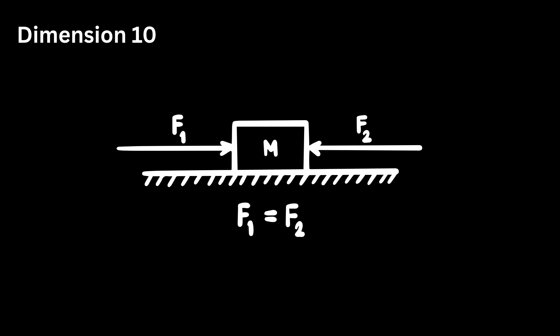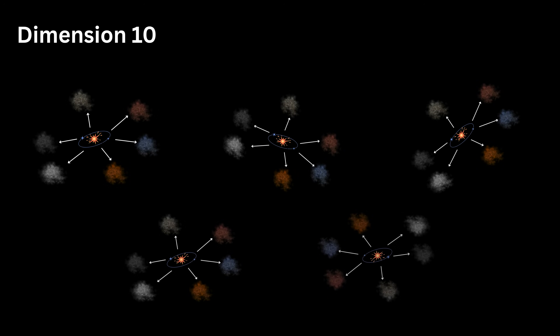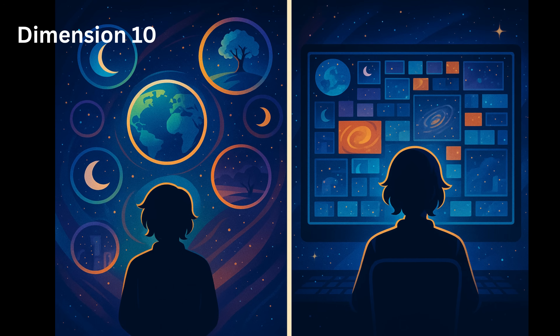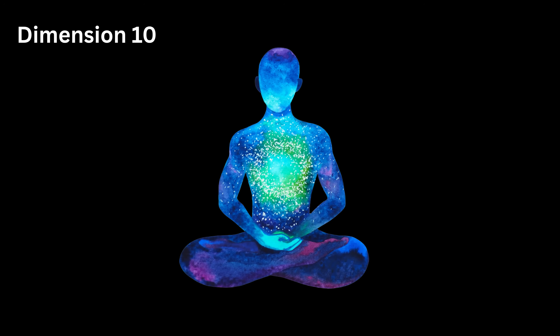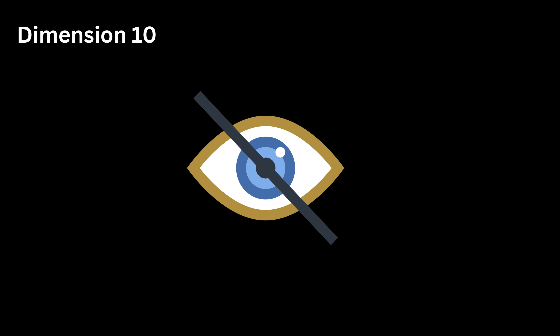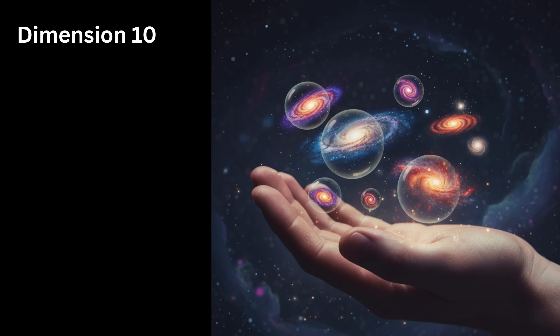Dimension Ten. Now step back from all games, all crossovers, all rules, all possibilities, and imagine you see every universe, every timeline, every moment, every version from outside completely. It is like sitting in front of a godlike computer screen where the entire internet — every file, every game, every rule, every alternate creation — is open in one giant window. Nothing is hidden from you. Dimension Ten is the ultimate possibility space.